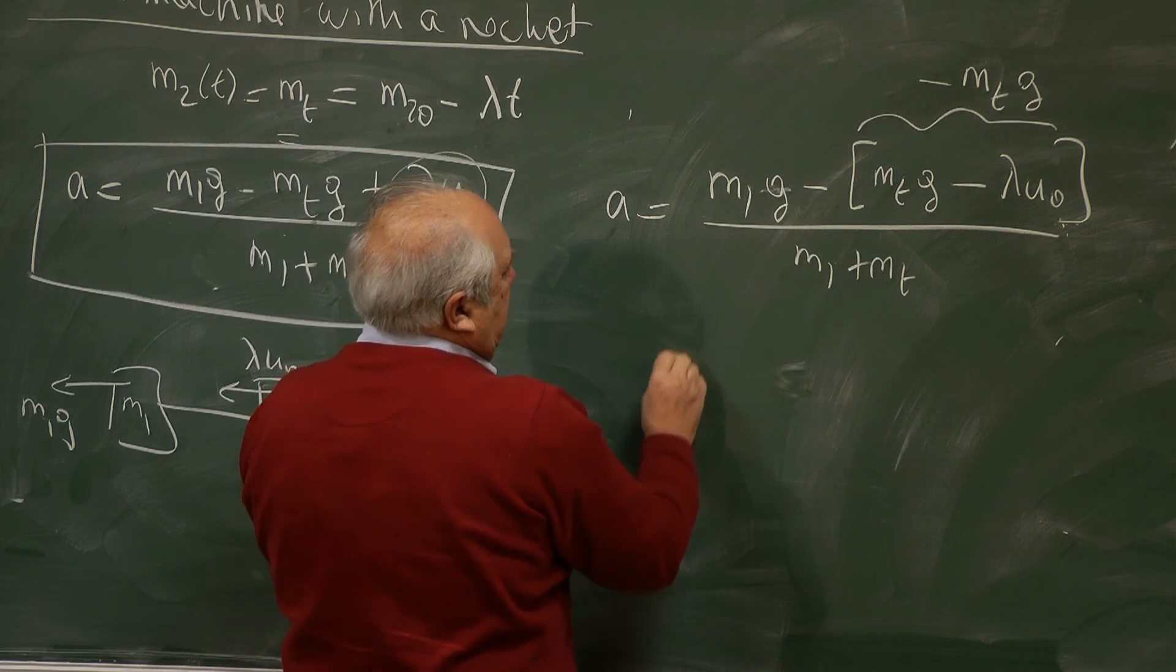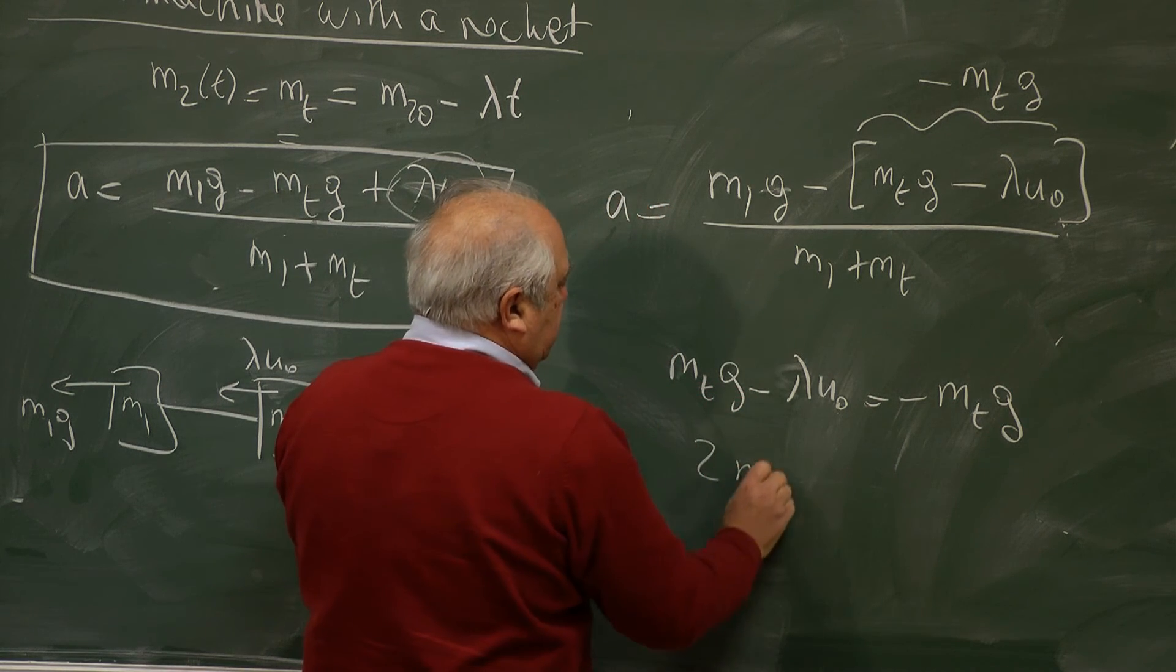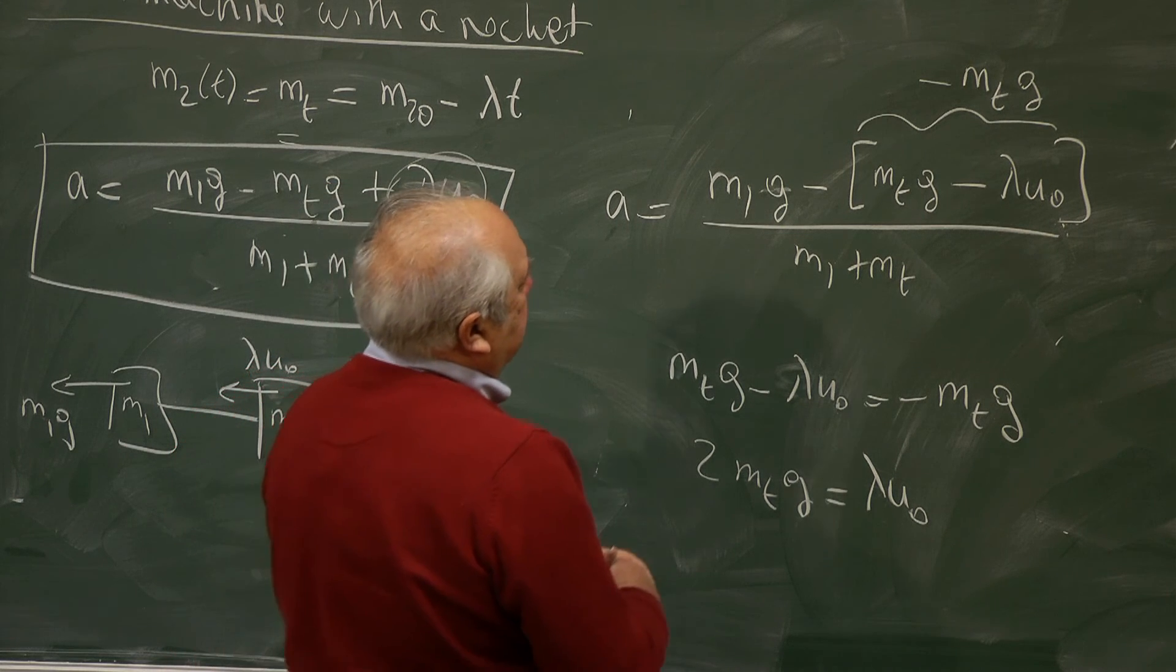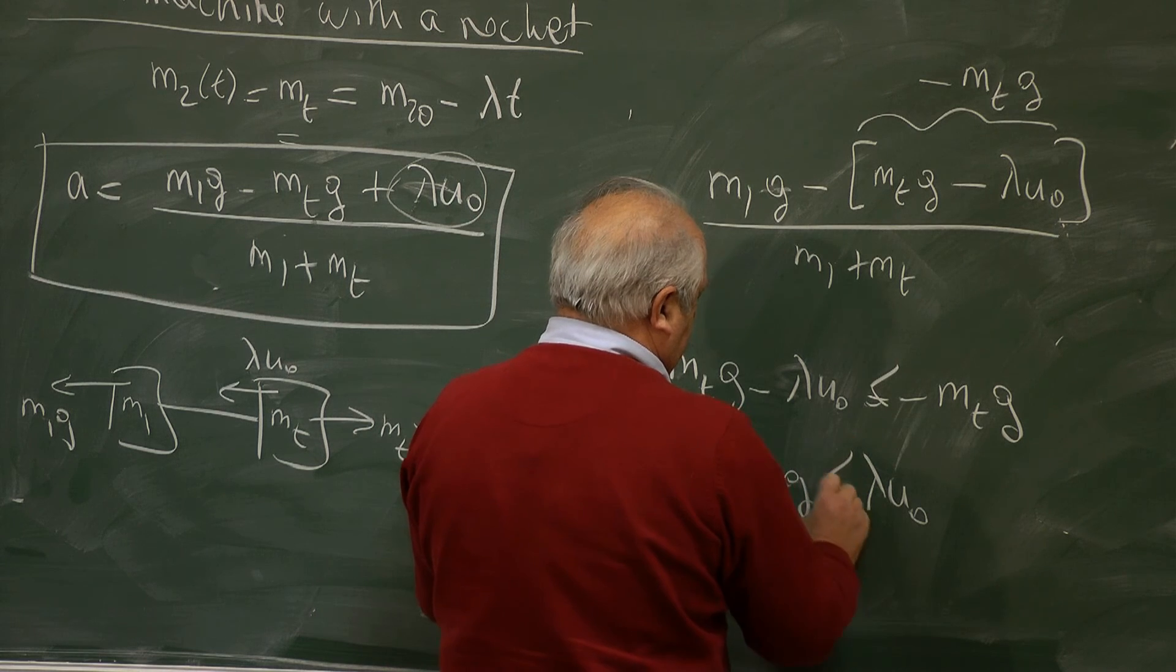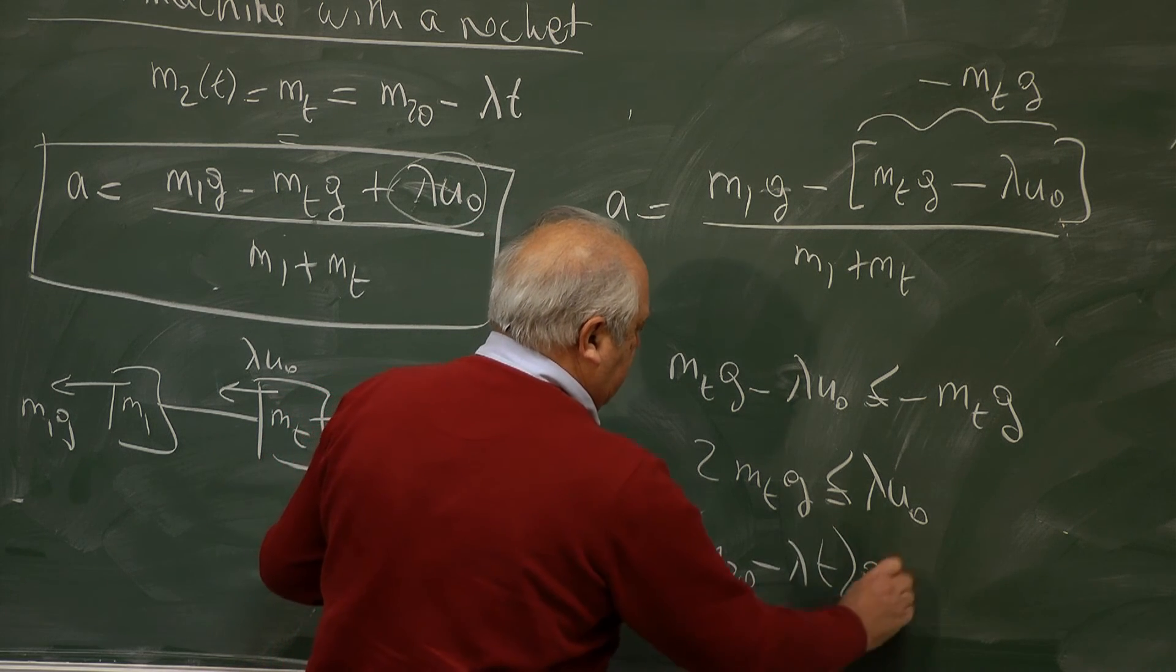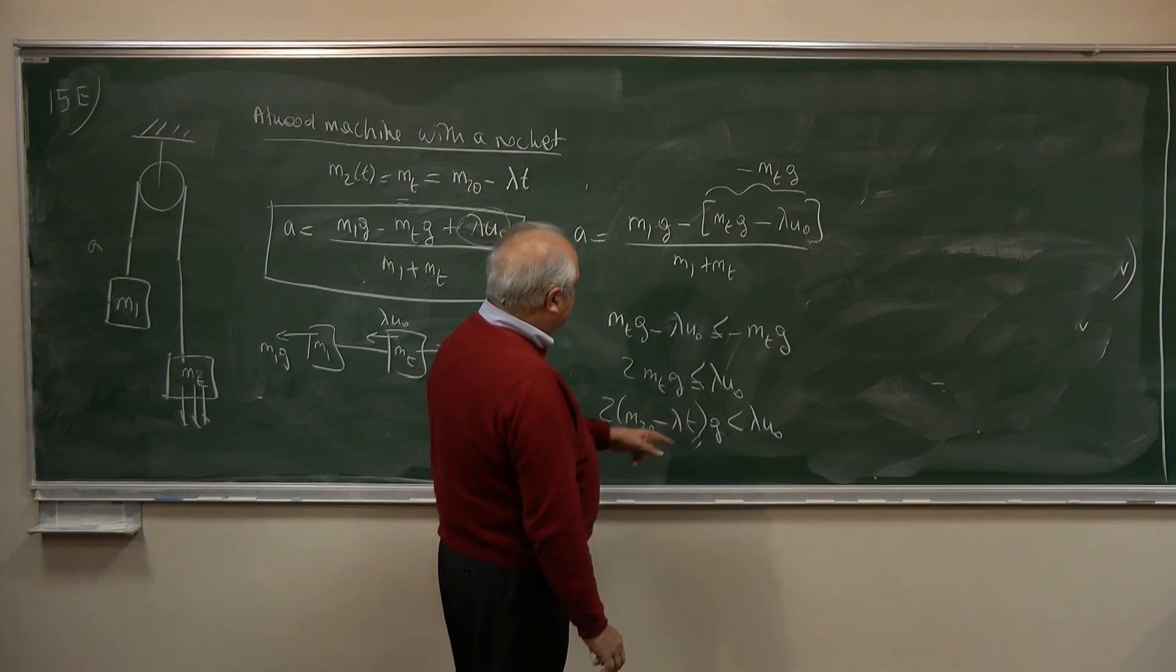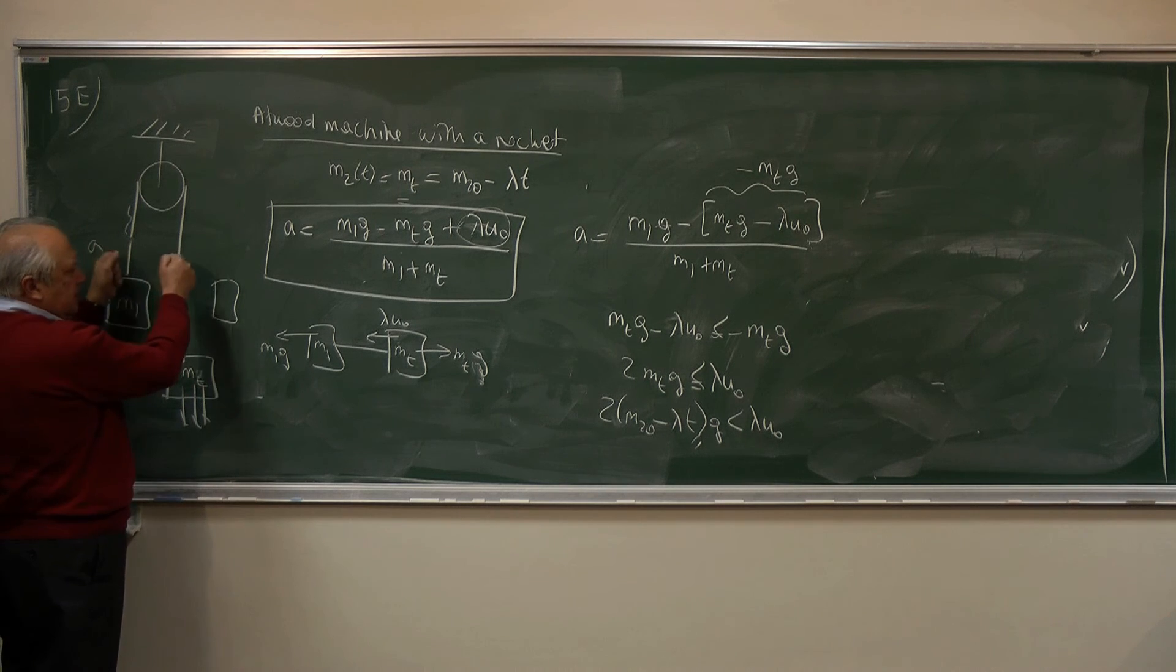So let's write it. 2MTg equals lambda U zero. So this is when A equals G. So it should be not equal but less than that. So with that condition, 2 times M2 zero minus lambda T times g equals lambda U zero. This picks up a time. So when the time is such that this becomes lower than that, then this is flying and the string will go slack, because it cannot carry compression.